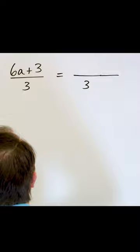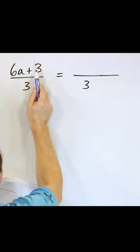But what can I do in the numerator? What is common to this? Well, the a is not common to both, but a three is - both of these numbers are divisible by three.